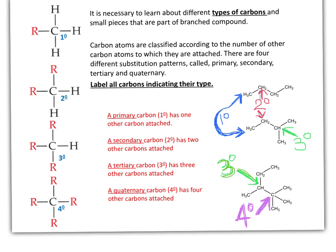We can see in this molecule that we have a secondary carbon in the middle of butane. Butane has two end carbons with three hydrogens each, so those are two primary carbons. In the second molecule, we can see a tertiary carbon here and three primary carbons. This is also a secondary carbon, just like the one in butane, because it is bonded to two carbons. In the last case, we have one quaternary carbon because this carbon is bonded to four carbons: one, two, three, four.